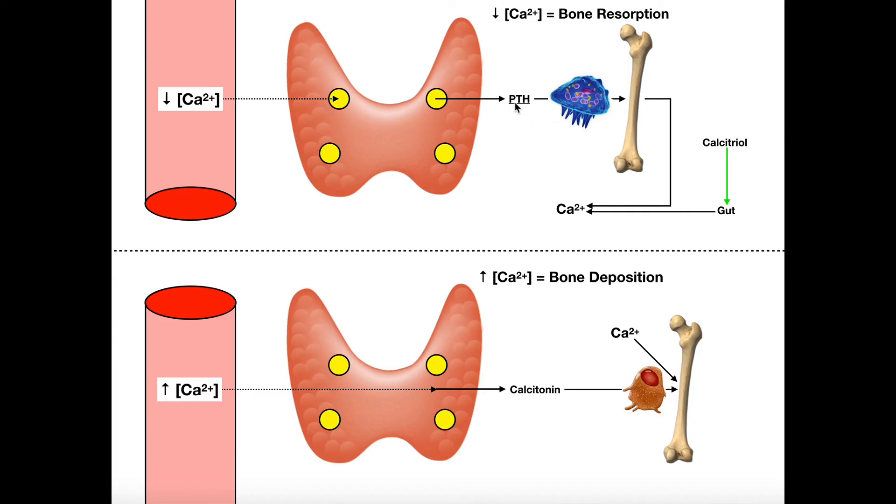Of course, PTH is acting on the osteoclast, which release calcium from the bone into the blood, and that brings the calcium levels back up. That's just negative feedback right there. But that calcium level in the blood needs to be maintained. So in other words, when there is low blood calcium, that stimulates bone resorption.